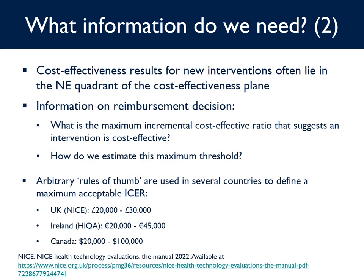Most cost-effectiveness results for new interventions often lie in the north-east quadrant of the cost-effectiveness plane. In order to inform reimbursement decisions, we need to know what the maximum incremental cost-effectiveness ratio is that suggests an intervention to be cost-effective. Arbitrary rules of thumb are used in several countries to define a maximum acceptable ICER. For example, in England, NICE's methods guidance states that interventions with an ICER of less than £20,000 per QALY gained are considered cost-effective. Above an ICER of £30,000 per QALY gained, advisory bodies will need to make an increasingly stronger case for supporting the intervention as an effective use of NHS resources.